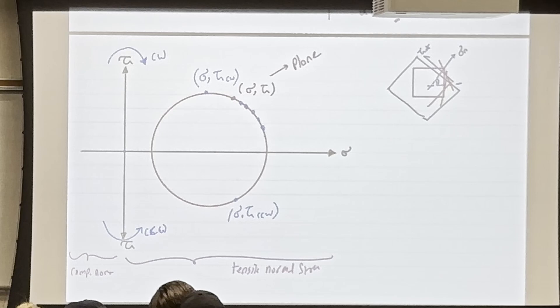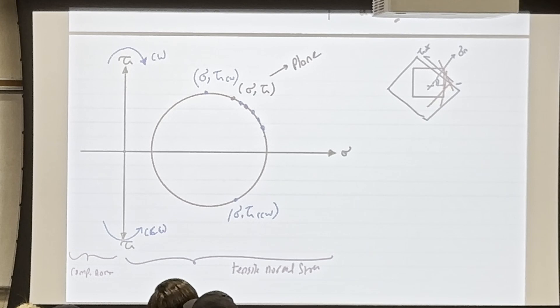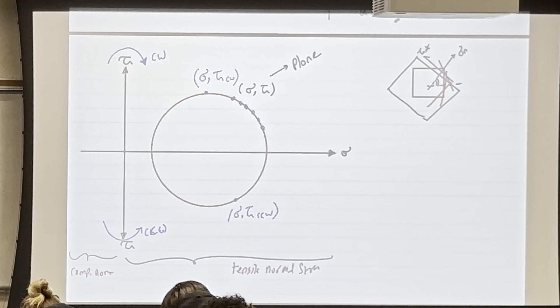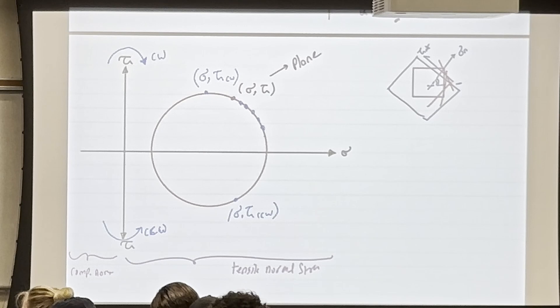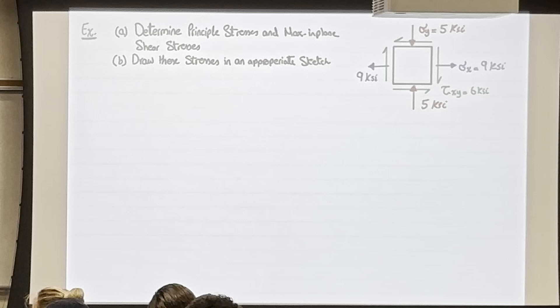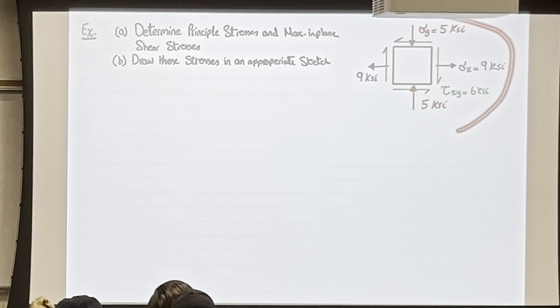σ_x = 9 ksi, σ_y = −5 ksi, and τ_xy = −6 ksi. This is not new. Now find the center of Mohr's Circle, which is 'a': a = σ_average = (σ_x + σ_y)/2 = (9−5)/2 = 2 ksi. So the center of the circle is at (2, 0) — shifted in x but not in y.